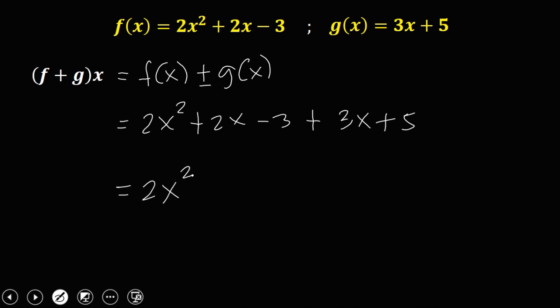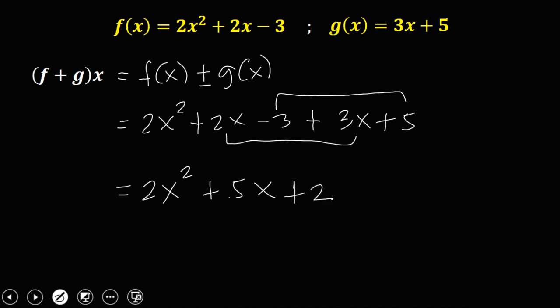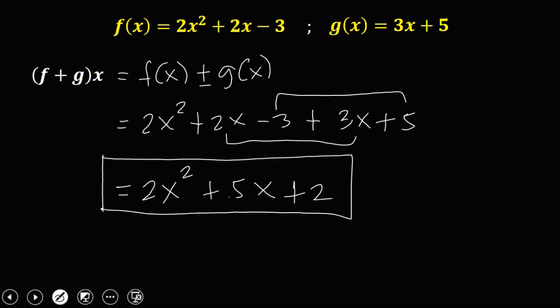Then simplify by combining like terms. So we have 2x and 3x, so that's 5x. Then negative 3 plus 5 is positive 2. So this is the sum of these two functions.